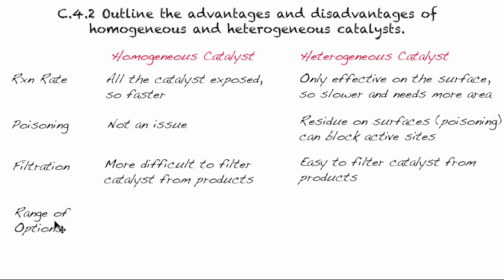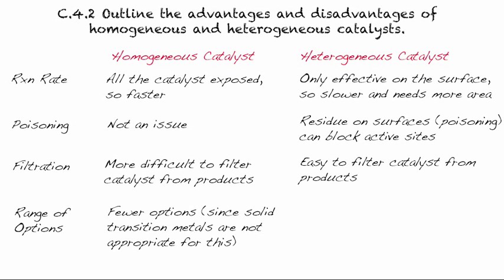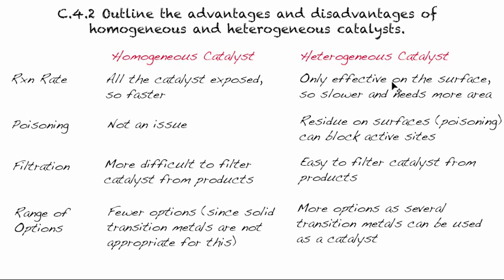In terms of range of options — if you looked at a book listing all the different catalysts available — you usually have fewer options with homogeneous catalysts, because a lot of our catalysts are transition metals, which are solid, and so they don't work as well in that case. With heterogeneous catalysts, there are more options, as several transition metals can be used as a catalyst. Not all transition metals are good catalysts — some are too weak, like silver, to act as good catalysts.